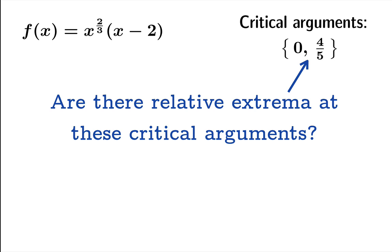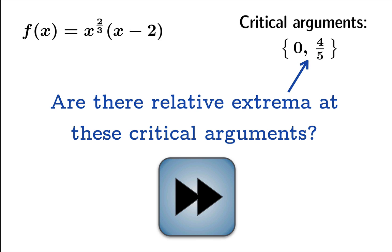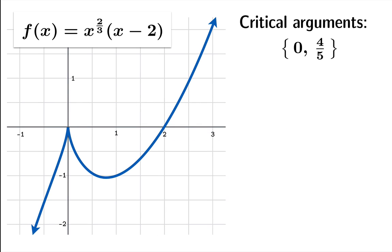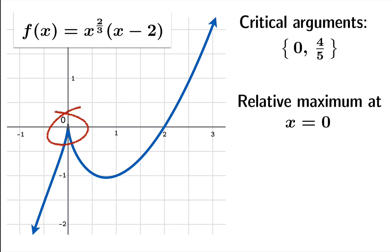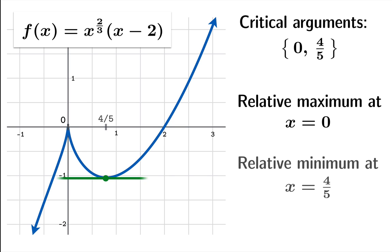Those are the candidates for relative extrema. We could do further analytic analysis, but let's fast-forward to the punchline by plotting a graph with a graphing utility. The graph shows that at x = 0 we indeed have a relative maximum, and at x = 4/5 we indeed have a relative minimum. So both critical arguments in this example happen to correspond to relative extrema.